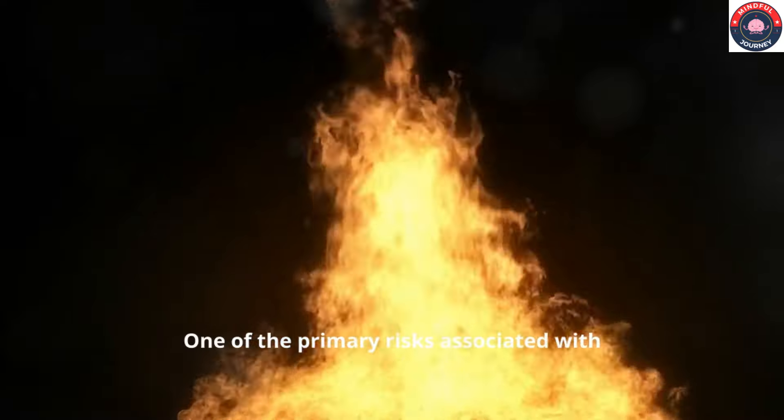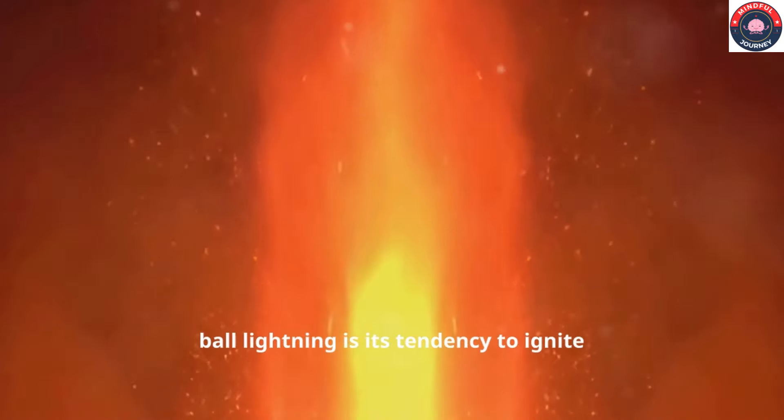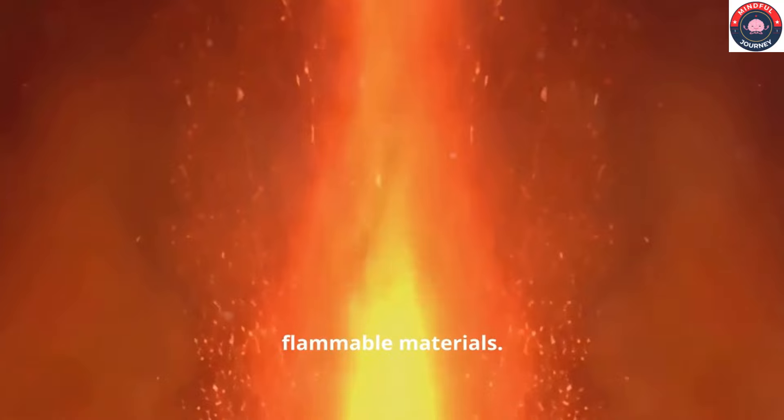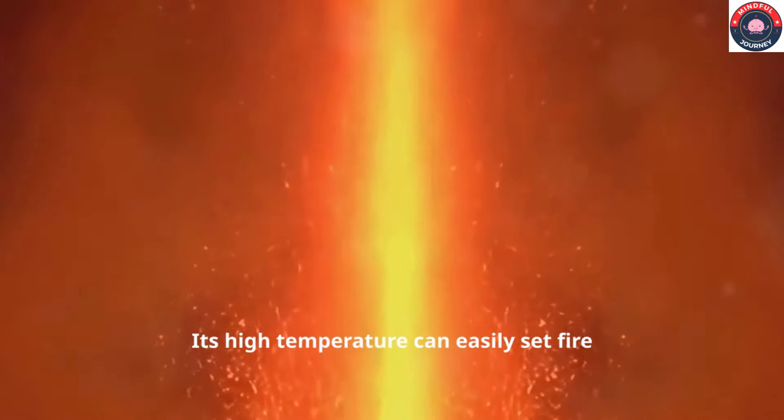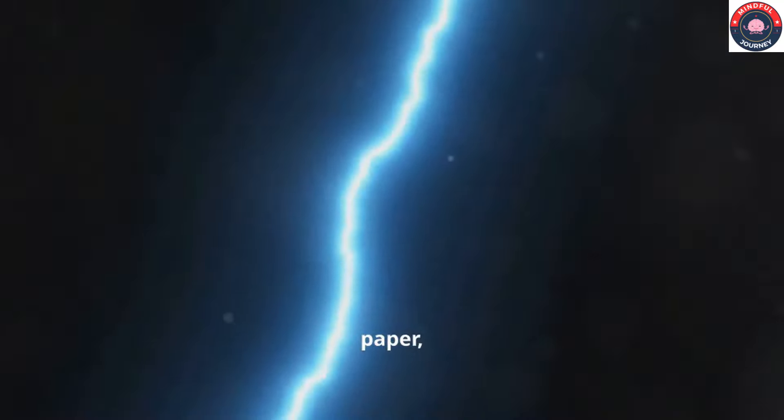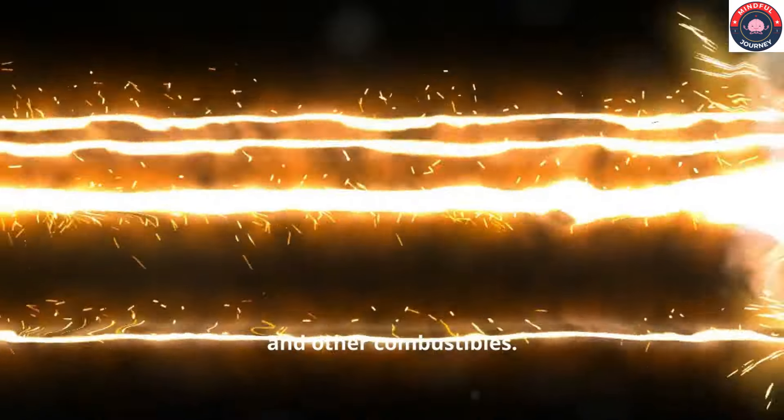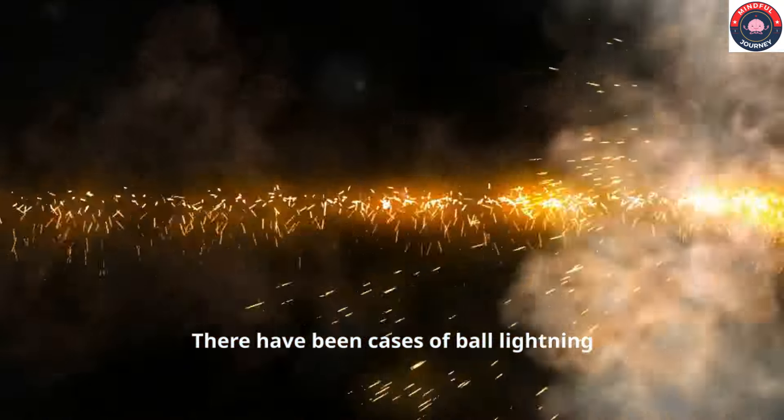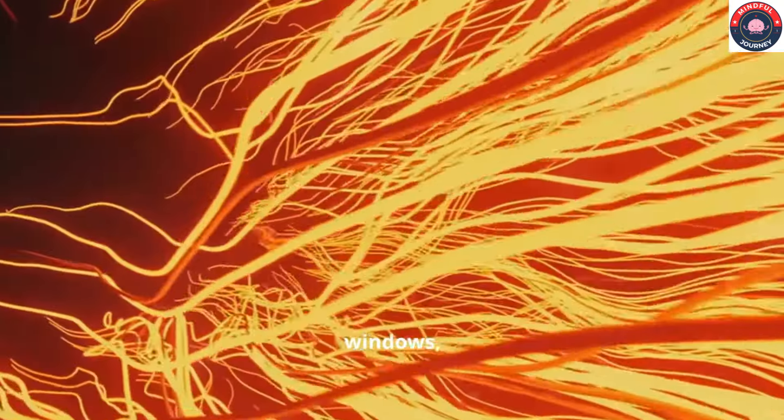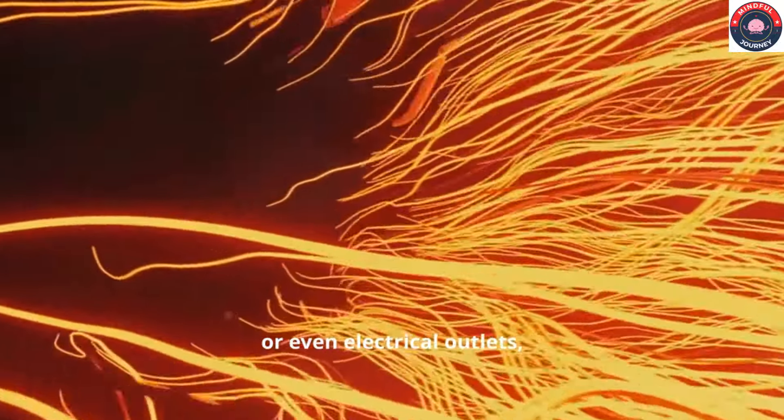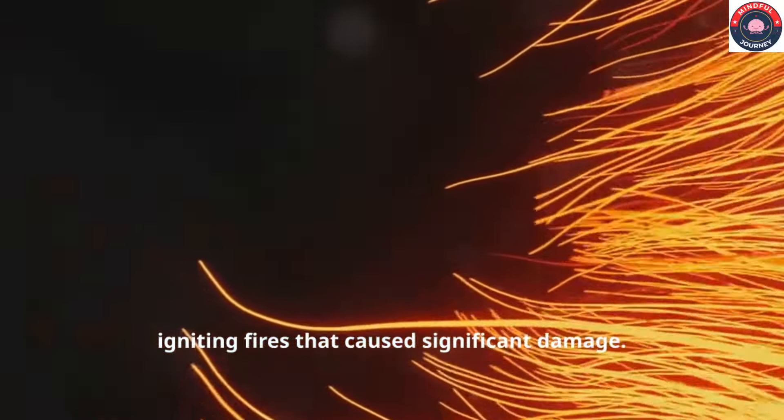One of the primary risks associated with ball lightning is its tendency to ignite flammable materials. Its high temperature can easily set fire to wood, paper, and other combustibles. There have been cases of ball lightning entering homes through chimneys, windows, or even electrical outlets, igniting fires that cause significant damage.